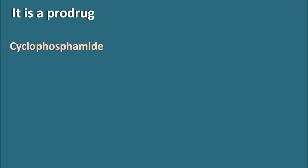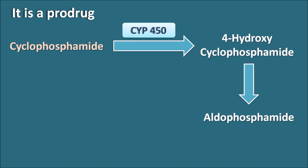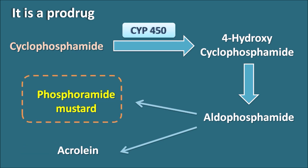Cyclophosphamide acts as a prodrug. When given in vivo, it is converted into its metabolite 4-hydroxycyclophosphamide. This step is mediated by cytochrome P450 enzymes. Once 4-hydroxycyclophosphamide is formed, it is converted into aldophosphamide by a ring-opening reaction. Finally, aldophosphamide is split into two compounds: phosphoramide mustard and acrolein. Phosphoramide mustard acts as the alkylating agent responsible for the anti-cancer activity of cyclophosphamide.